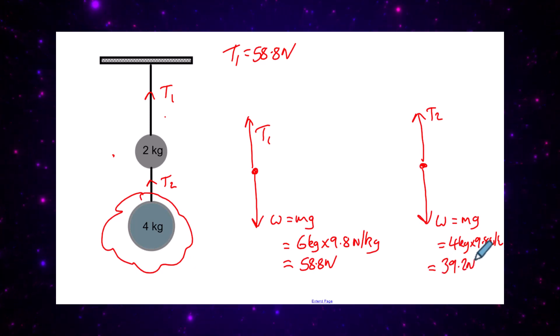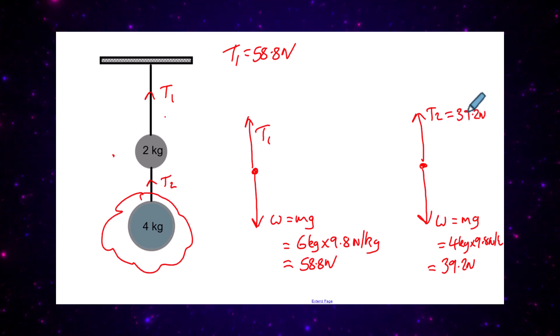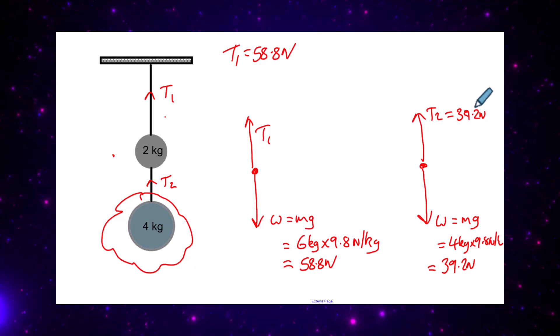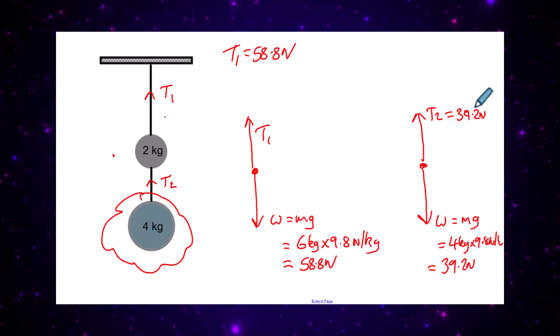So the tension T2 to support that must be equal to 39.2 newtons. That's how you do the two ball situation: just isolate the masses below the tensions you're trying to look at, call them all one thing, and solve with a simple diagram.